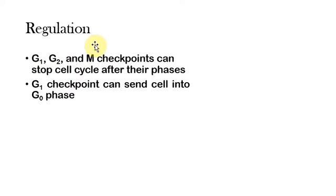So there are three major checkpoints. There are other checkpoints in the cell cycle but three that stand out as the most important. They're known as the G1, G2, and M checkpoints. Each of these occurs at the end or near the end of those phases. Furthermore, the G1 checkpoint, if certain conditions are right, will send a cell into what's known as the G0 phase.